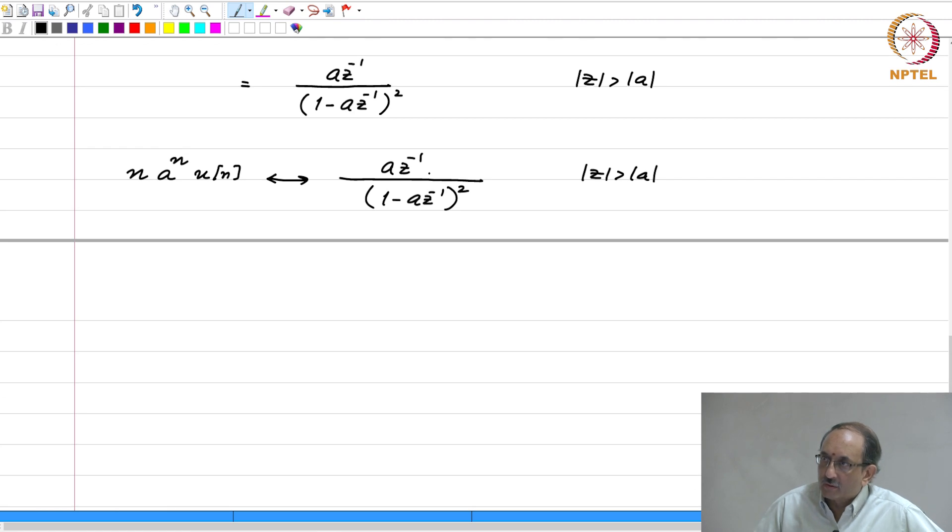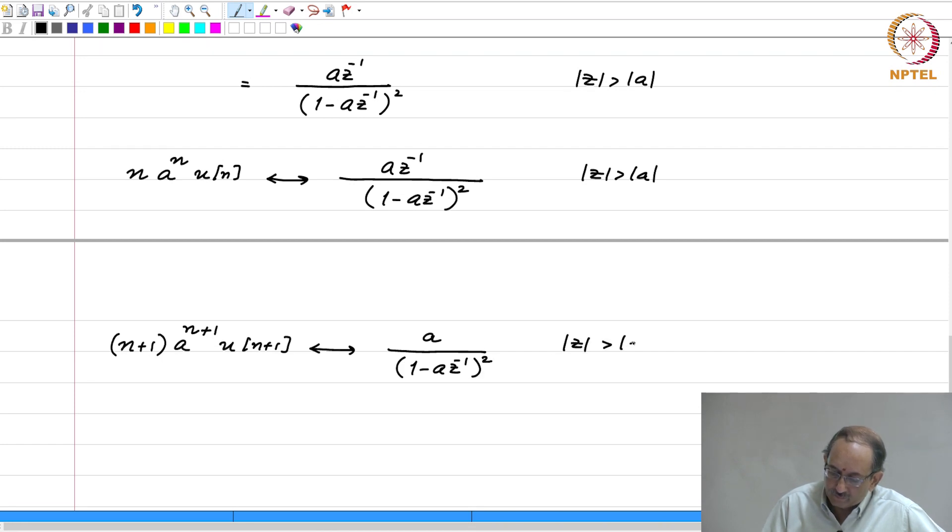We need to get rid of this z inverse. For that, we multiply by z. If you multiply the transform domain by z, you will replace wherever N is there, N by N plus 1. Therefore, this becomes N plus 1 a to the N plus 1 u of N plus 1 and this will be the transform of a by 1 minus a z inverse whole squared and you can cancel one power of a on both sides. So, this becomes N plus 1 a to the N u of N plus 1.